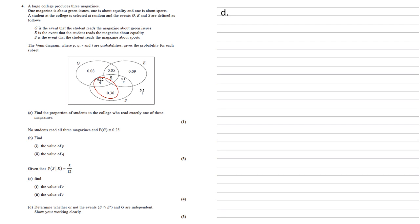So the probability of S intersect E dash is 0.36 add 0.12, which is 0.48. The probability of G is all of the parts of G added together. So the 0.08, add 0.05, add 0.12, add 0, which is 0.25.